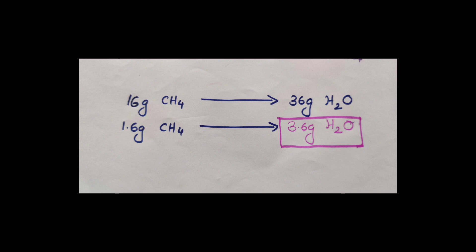1.6 gram of methane. Therefore, let us find if the methane is 1.6 gram. We asked that if 16 gram of methane gives 36 gram of water, then 1.6 gram of methane gives 3.6 gram of water.